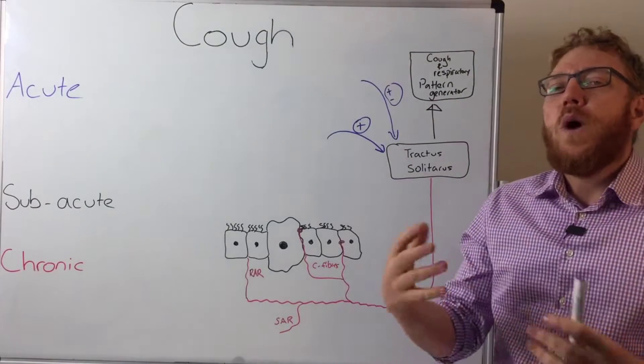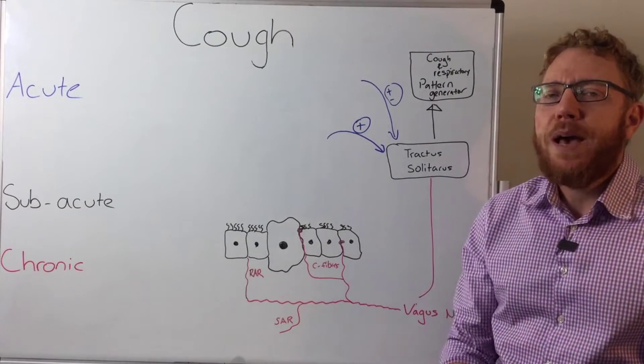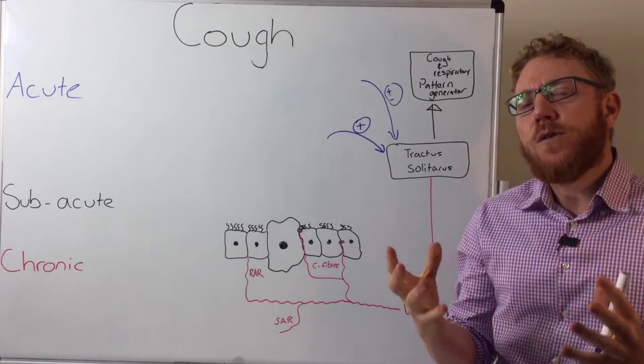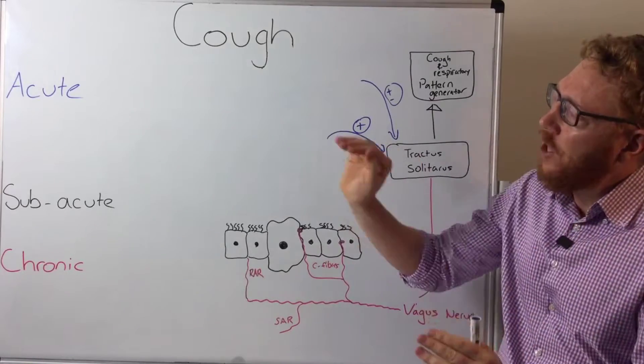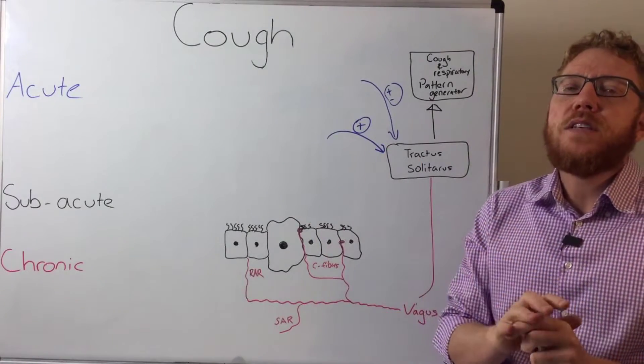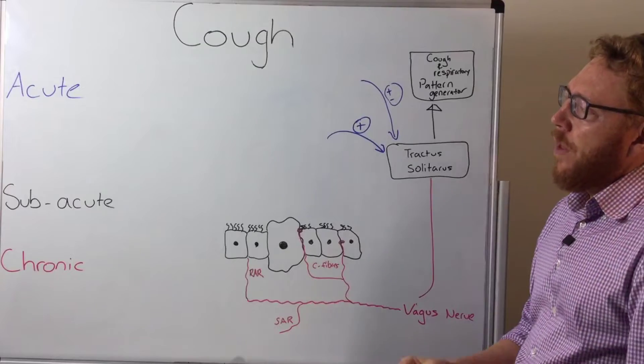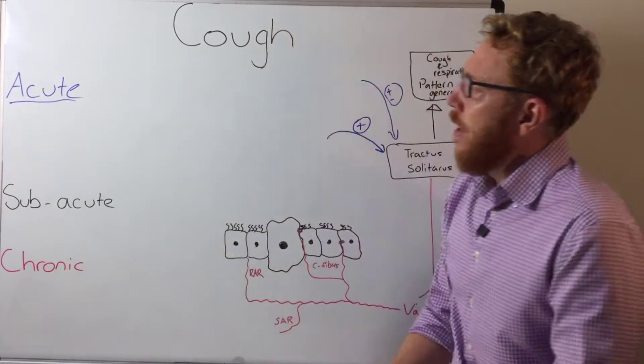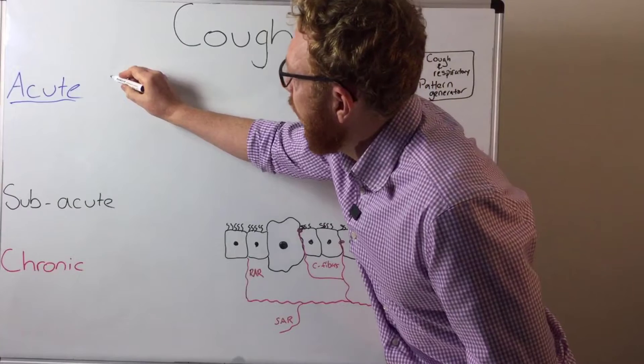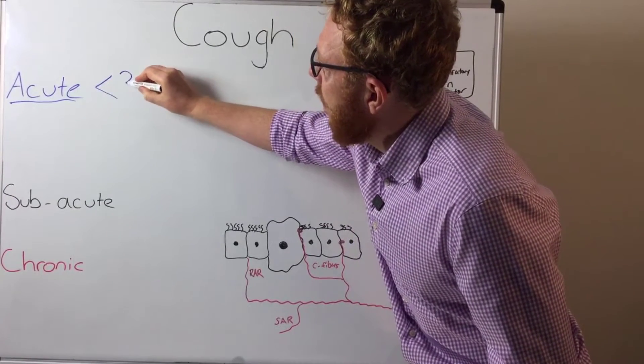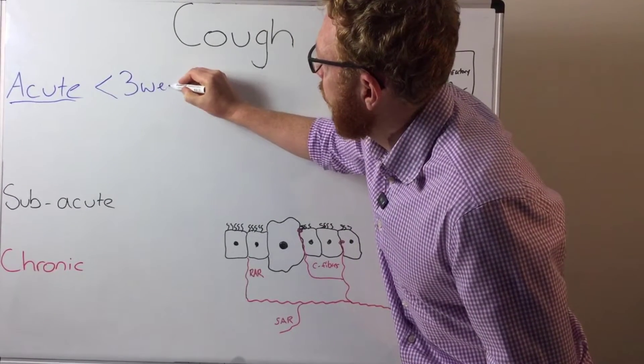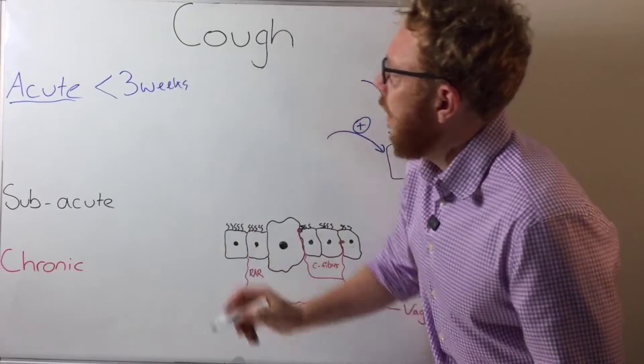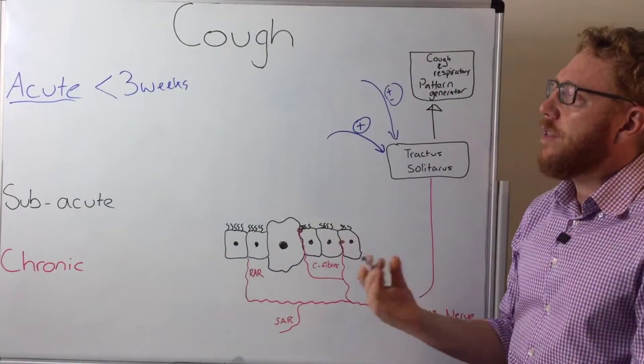The way that we categorize is usually based on duration. And if you know the duration then you can look in each part of it different ways that you can provide diagnosis. So starting off with the acute cough. This is a cough that's usually been around for less than three weeks.